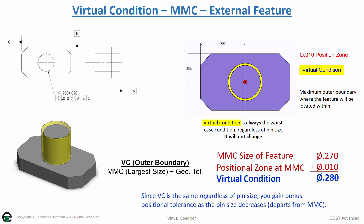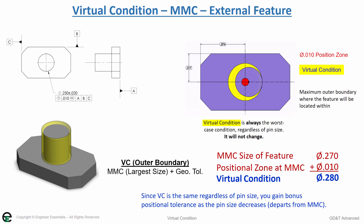Since the virtual condition is the same regardless of how big or small your pin is, you gain bonus tolerance as the pin size decreases or departs from MMC, however your virtual condition maintains the same size.